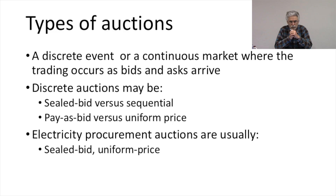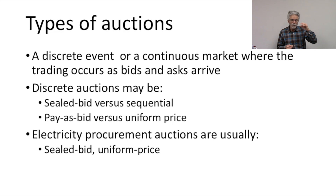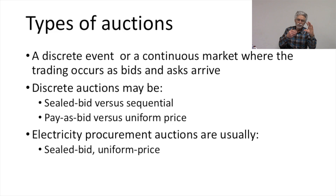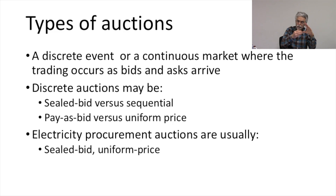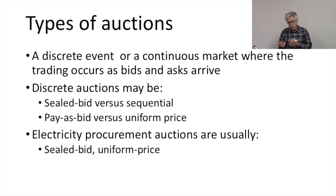Another important characteristic of auctions is how the price is set. In a procurement auction, bidders can either receive the price they bid, or all bidders can receive the same price. So auctions come in two different flavors: a discriminatory price auction, where what you bid is what you get, or a uniform price auction, where everybody makes their bids and everybody gets exactly the same rate once the auction is closed.